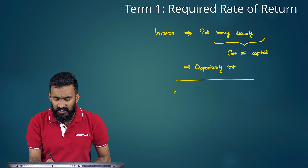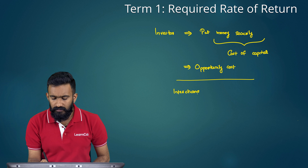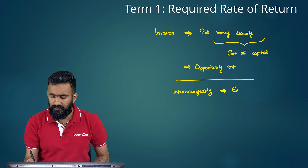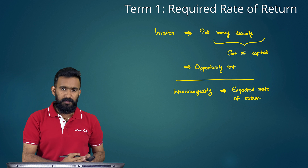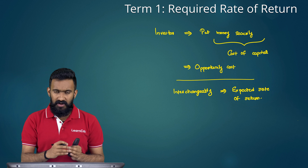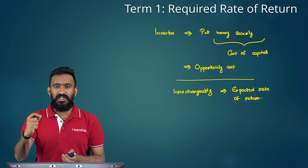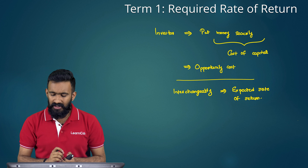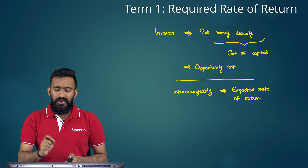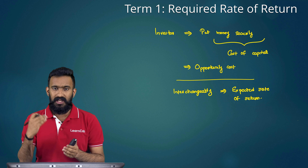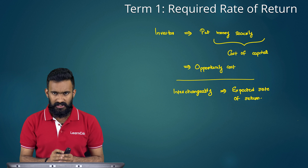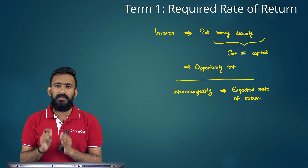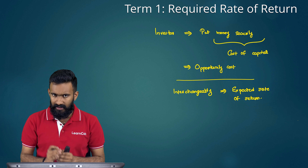This term is generally used interchangeably with another term called expected rate of return. Expected rate of return is a concept from the investor's perspective — how much does the investor expect from this particular security. Depending on that, he would prefer to pay a certain price for that security in the market. Required rate of return is the concept used for valuation: it represents the minimum return an investor expects based on his opportunity cost or cost of capital.